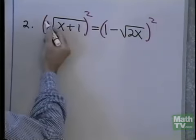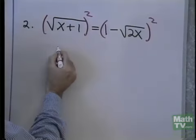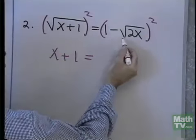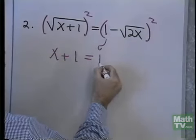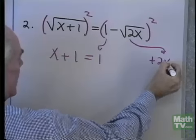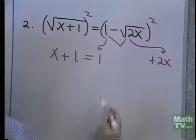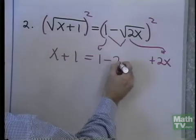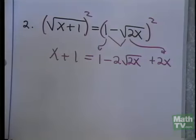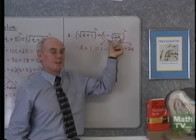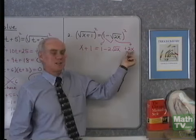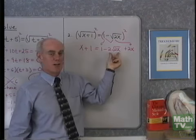The square of the square root of x plus 1 is just x plus 1. Now, when I square the right side, I have two separate terms, so I square the first term — that's 1 — square the last term — that's 2x — and I have to take twice the product of the two terms for my middle term: negative 2 times square root of 2x. Remember, when you square a binomial, it's the first term squared plus twice the product of the two terms plus the last term squared. So I have to have this middle term.